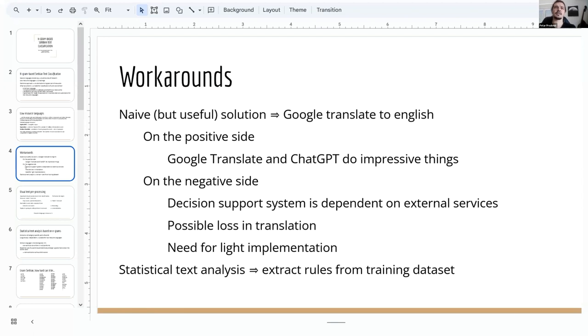Last but not least, we might have a need for a light implementation, for example, to put the decision support system on a client, and padding a dictionary is probably not the best solution in such case. The other workaround, or better said approach, is the statistical text analysis, where we try to extract some rules from the training data based on some statistical appearances of specific indicators, specific words, parts of words, consecutive symbols, and so on.